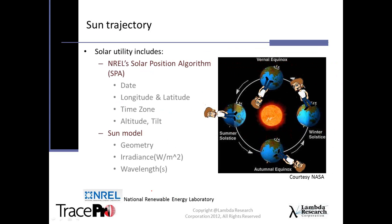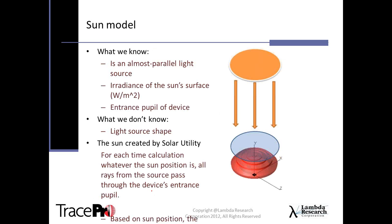The solar utility includes NREL's — the National Renewable Energy Lab's — solar position algorithm. It takes into account the date, longitude and latitude of the solar collector system, the time zone, altitude, and tilt automatically. You specify the sun model you want to use and the wavelength. What we know is that we have an almost parallel light source for the sun. After you provide the entrance pupil location and radiance, the utility creates the sun for each period, ensuring all rays from the source pass through the device's entrance pupil.